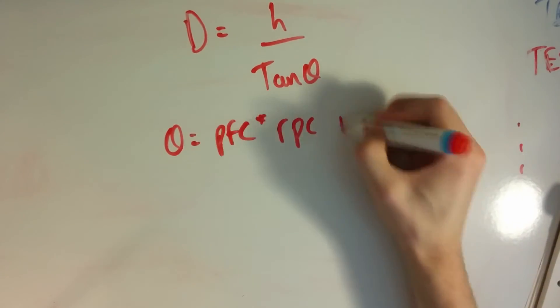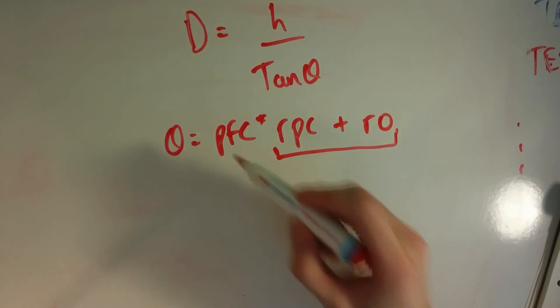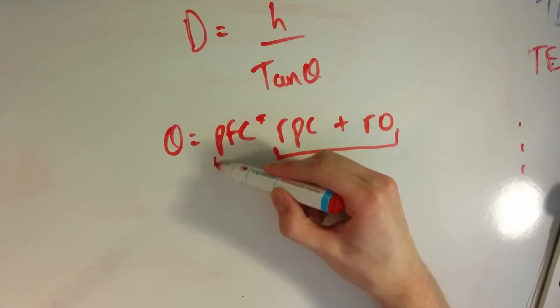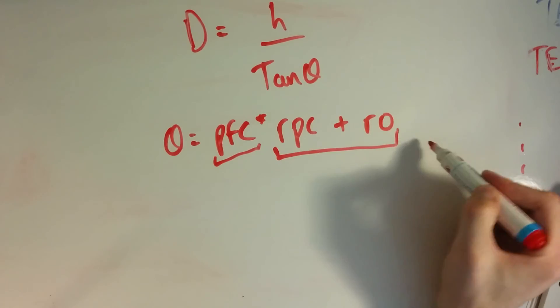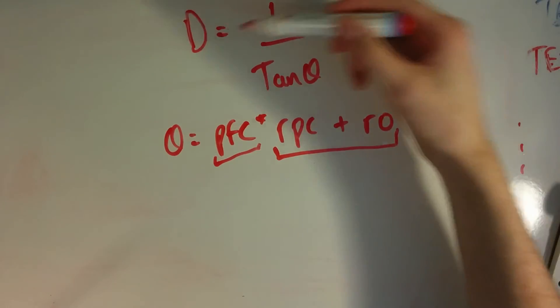So if you know theta, basically your computer program is going to give you pfc. These are just constants. So your computer program is giving you theta essentially, and then you can just throw this in d. Your computer program will turn out these equations.